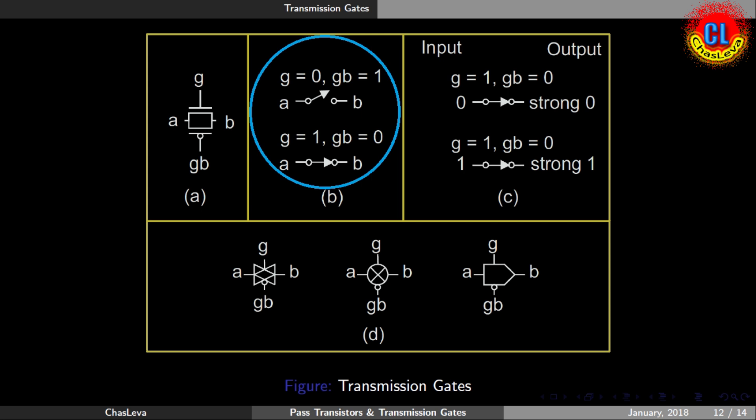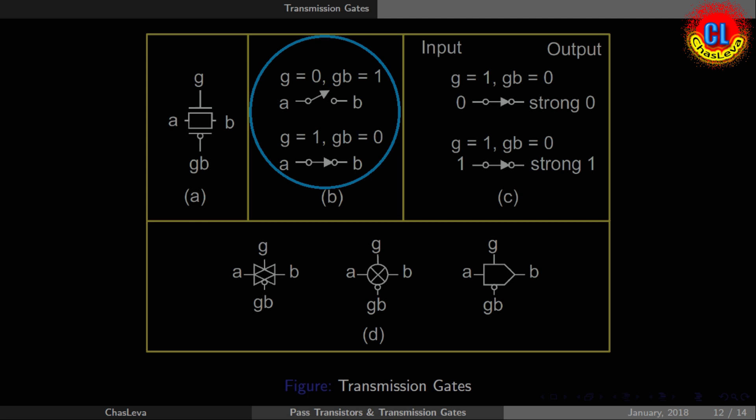If G is zero, there won't be any current flow between source and drain. If G is one, the input at source will pass to drain.